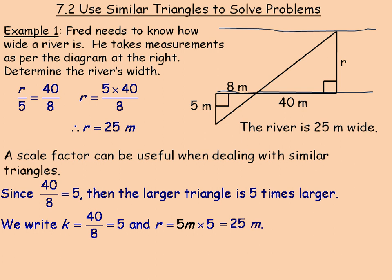That's another way to confirm the river is 25 meters wide using a scale factor. And if going in the opposite direction — if you know the larger side and want the shorter hypotenuse — you would divide that side by 5 to find the smaller hypotenuse.